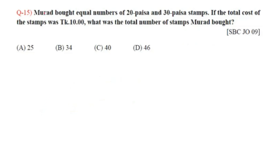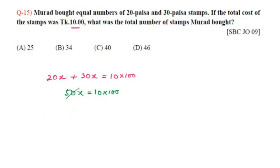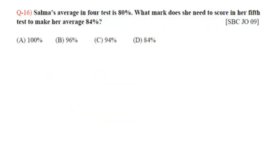Question number 15: Murad bought equal numbers of 20 paisa and 30 paisa stamps. If the total cost was taka 10, what was the total number of stamps? Let x be the number of each type: 20x + 30x = 10 × 100 paisa, so 50x = 1000, x = 20. Total stamps = 20 × 2 = 40. Option C, 40, is the answer.